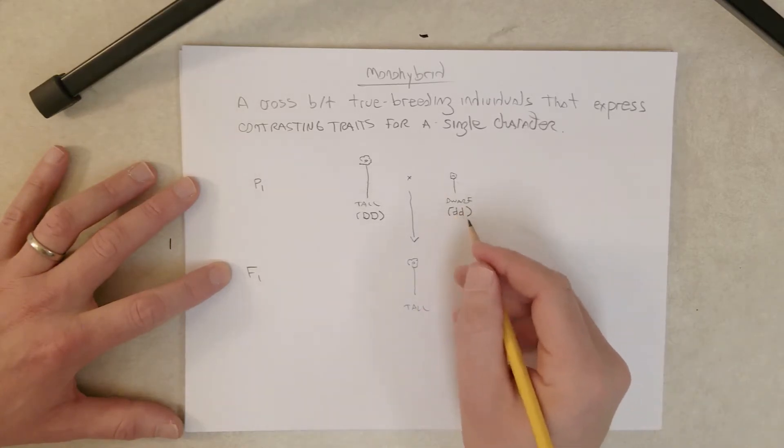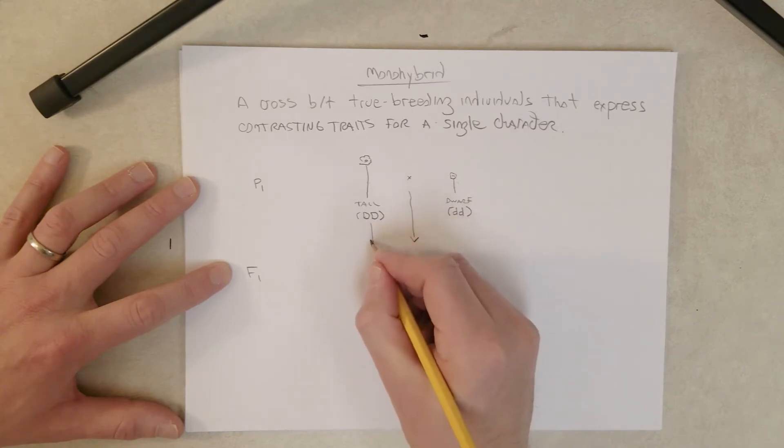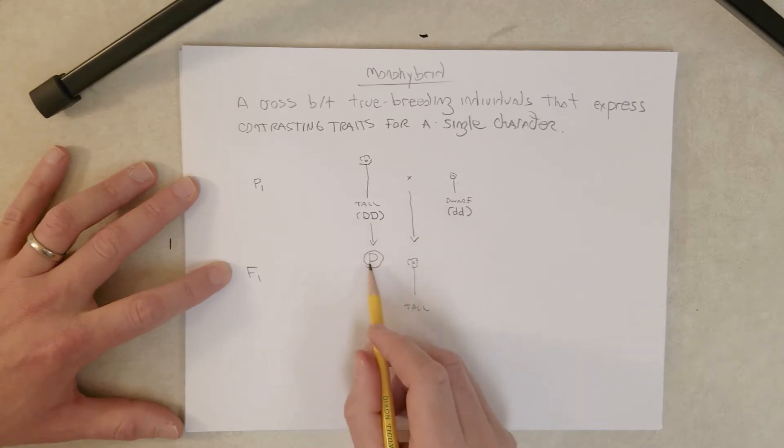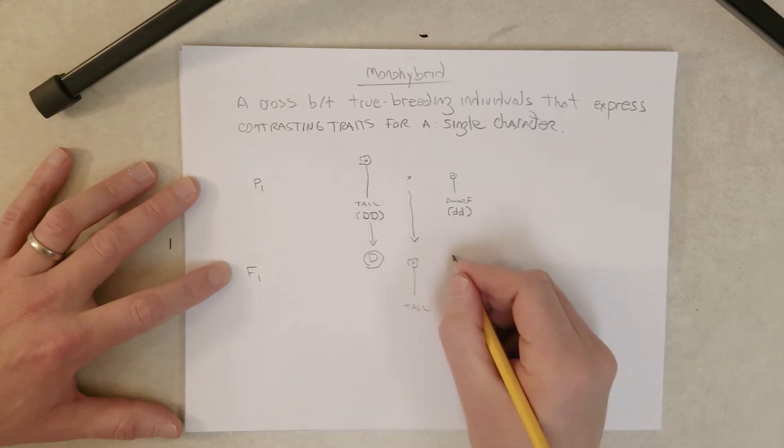So why? Let's see. Well, these tall plants here can only make one type of gamete: gametes with a D genotype, right? Each gamete has to inherit either the big D allele here or the big D allele here. There's only one type of allele, so all the gametes are genetically identical; they all have a big D allele.